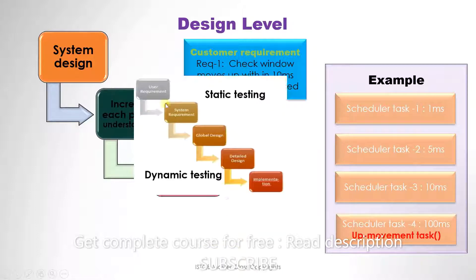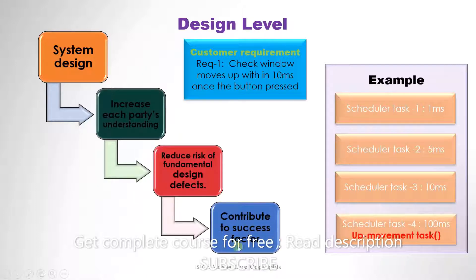Let's go back to our chart. Right now we are at the global and detailed design stage. If we carry out testing here and catch the mistake, it will not go on to the implementation stage. We will send correct software for dynamic testing and the product will be a success. If we don't do the testing, we send faulty software for dynamic testing and are forced to go back two steps to find the error. That's why testing at the design level is so important — it contributes to the success of the whole project.